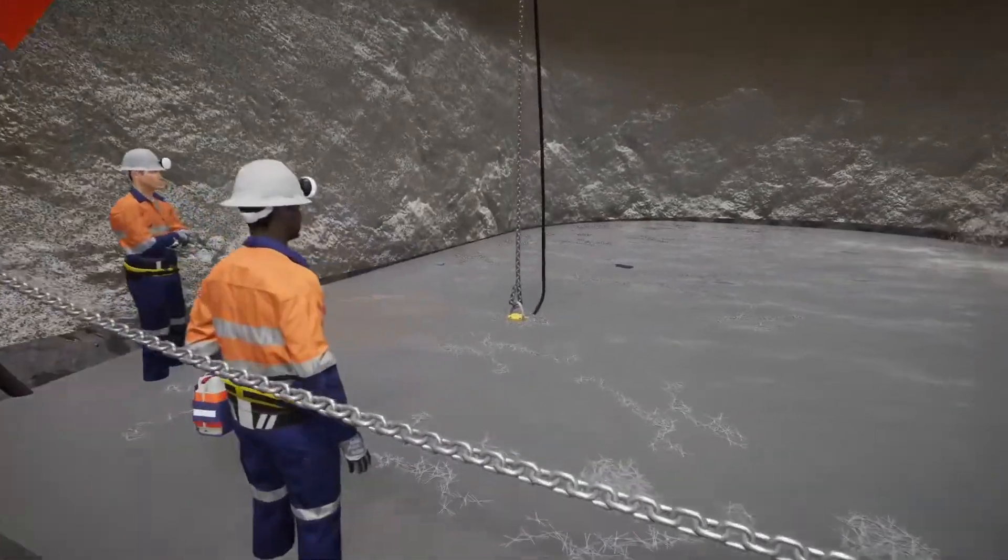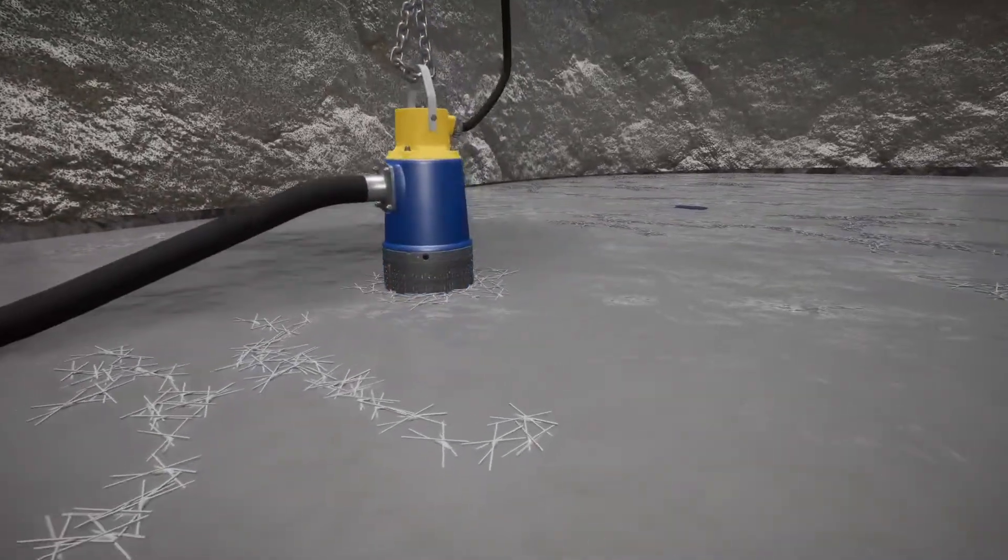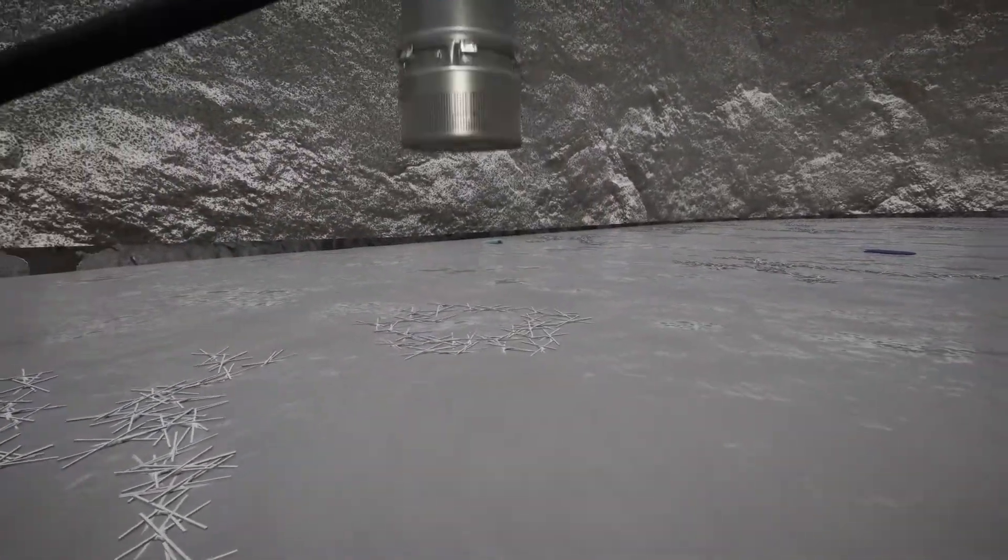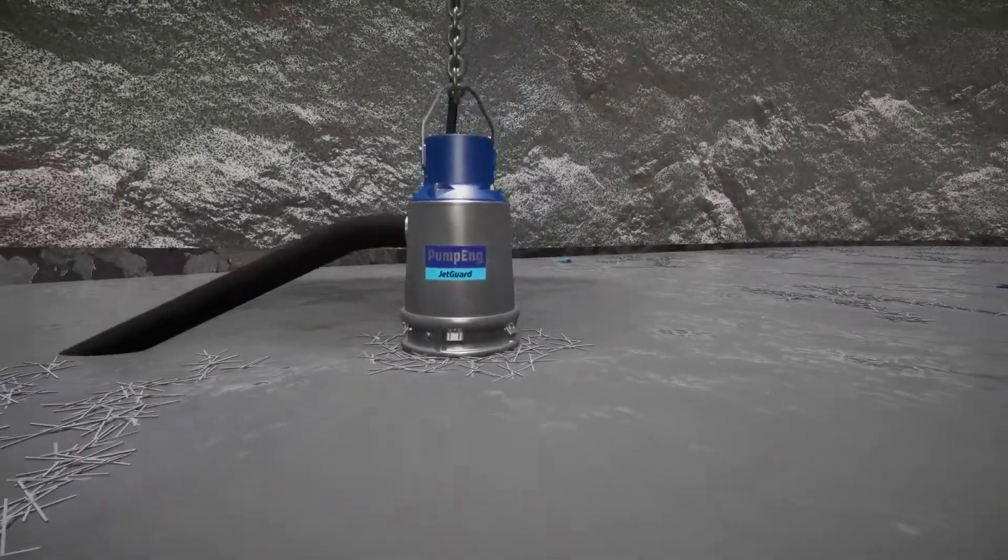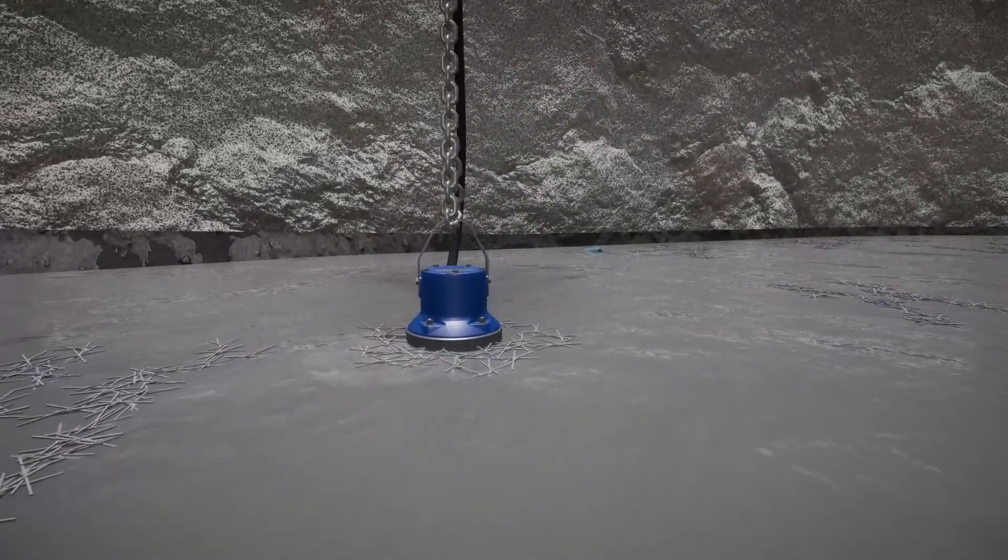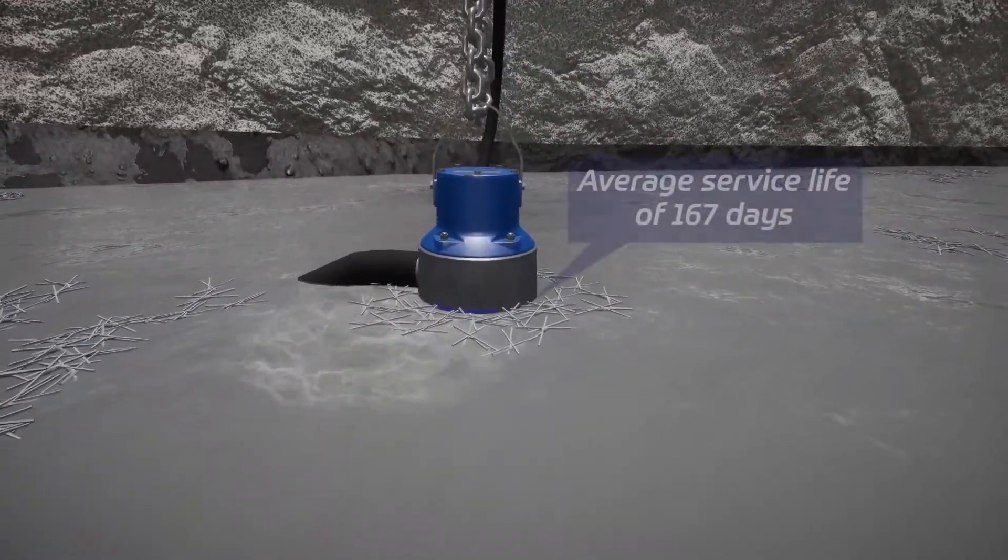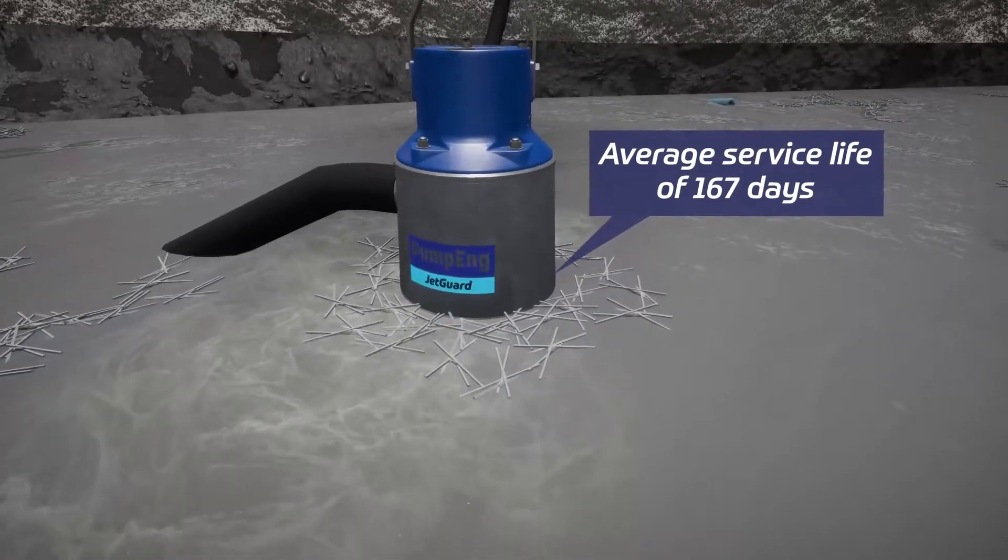To stop this from happening, PumpEng has designed the tough and reliable Jet Guard pump. Using a combination of a hydraulic curtain as the first defense and an all-metal wet end, the pump will continue operating in the harshest conditions.